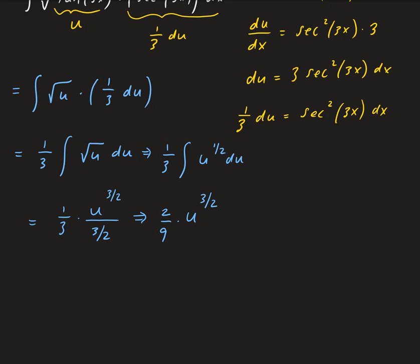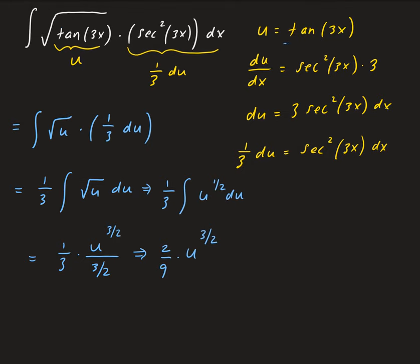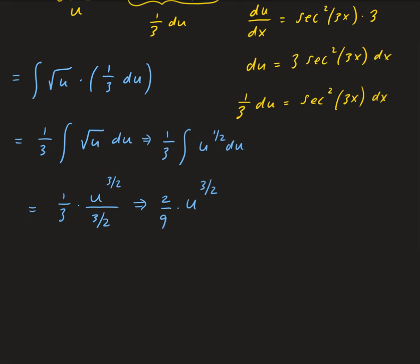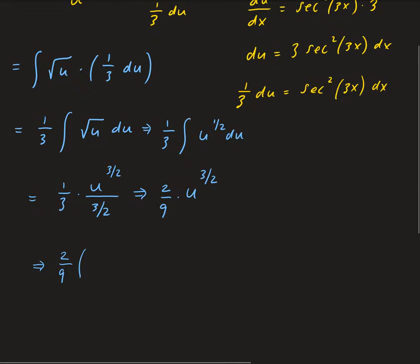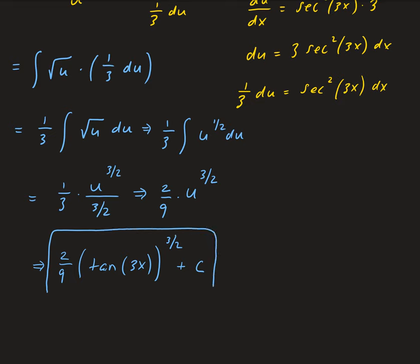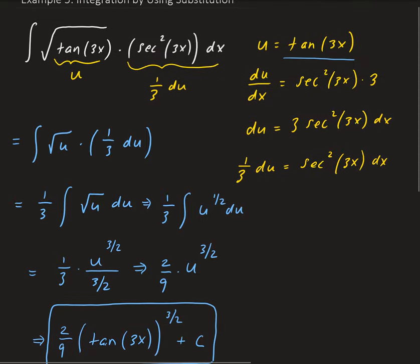So we have two-ninths times u to the three-halves. From here we just need to replace u with tangent of 3x and convert this back into x. So we have two-ninths times tangent of 3x to the power of three-halves, plus some constant C. This is the result of our integral — the antiderivative of the function we were given.